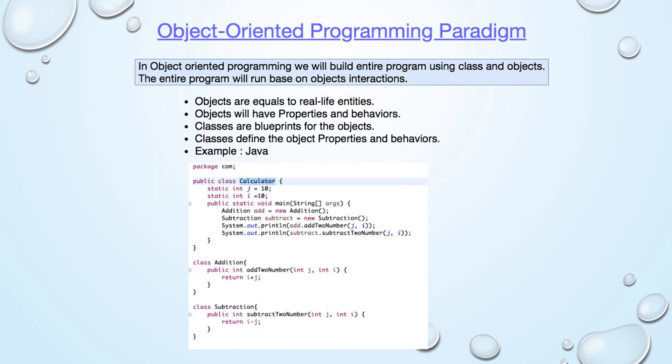Object-oriented programming. In object-oriented programming, we will use classes and objects to create an entire program. The whole program will run depending on object interactions. Objects are real-world entities with properties and behavior. The classes act as the object's blueprint. Classes describe the characteristics and behavior of objects.